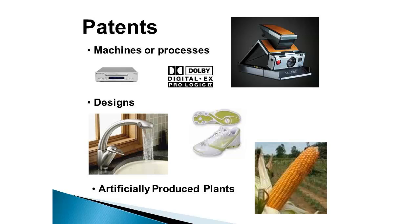To get a patent, you apply to the United States Patent and Trademark Office. You have to name your item, provide your name, and give a complete technical description of what it is and what it does. Normally, getting a patent requires a patent lawyer, because you really need to explain exactly how the thing works and why it's unique — why there isn't already something else out there. The patent office will search its records to see if someone has already invented it, and whether it's unique enough to warrant a patent.